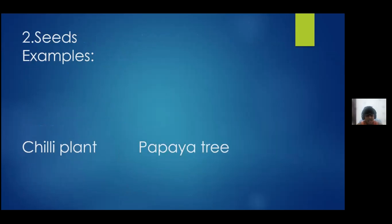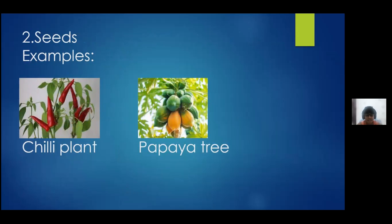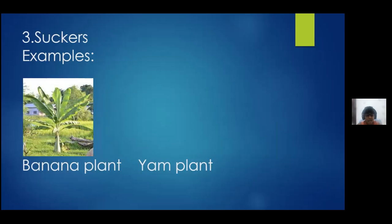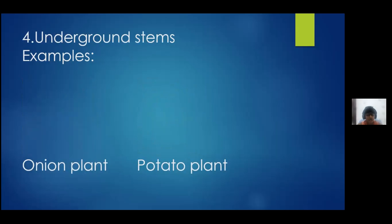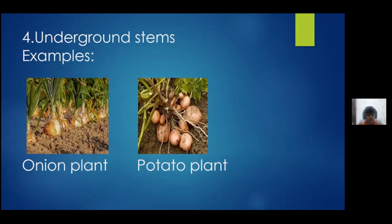The second one is seeds — the examples are chili plant and papaya tree. The third one is suckers — the plant examples are banana plant and yam plant. The fourth is underground stems — the examples are onion plant and potato plant.